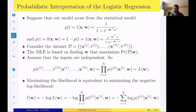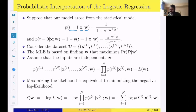The probabilistic model we have for logistic regression is: given inputs x and weights w, the probability of the true label being one is defined as 1 divided by (1 + e^(−w^T x)). That is the probabilistic model. If we carry out the derivations for maximum likelihood estimation, that gives us the same cross-entropy loss that we use in logistic regression.